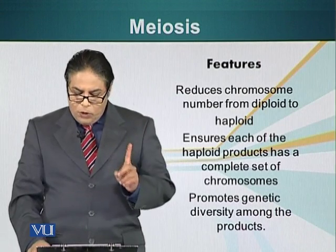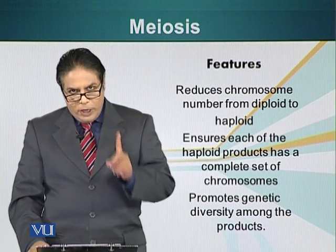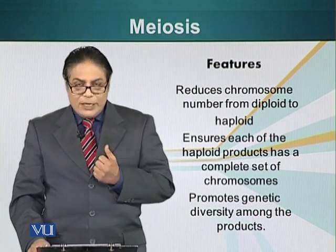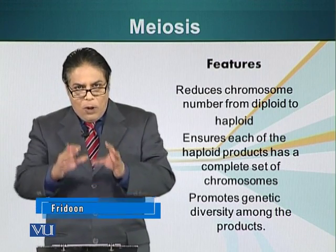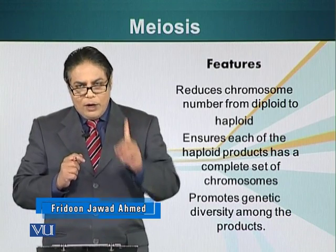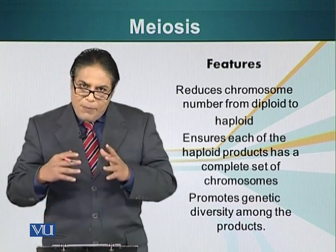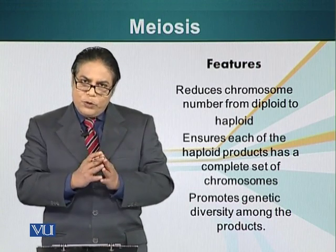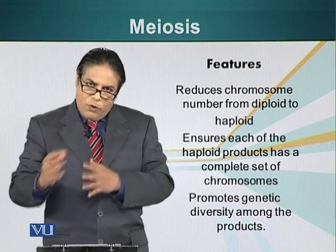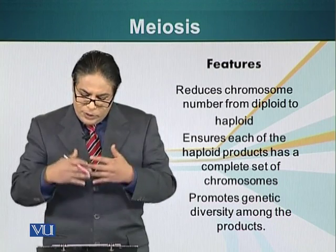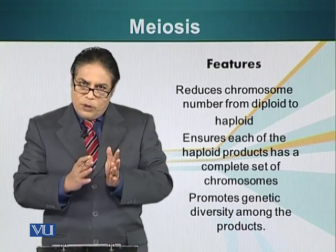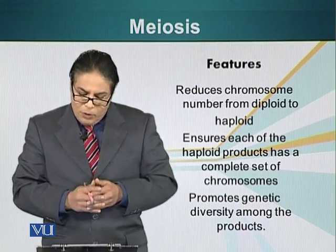The hallmark features of meiosis are: it reduces the chromosome number from diploid to haploid, and ensures each haploid product has a complete set of chromosomes — so all four daughter cells have at least one chromosome 1, one chromosome 2, and so on. It promotes genetic diversity in two ways: by exchanging pieces of chromosomes during the tetrad stage, and by the random arrangement of homologous chromosomes during meiosis I.